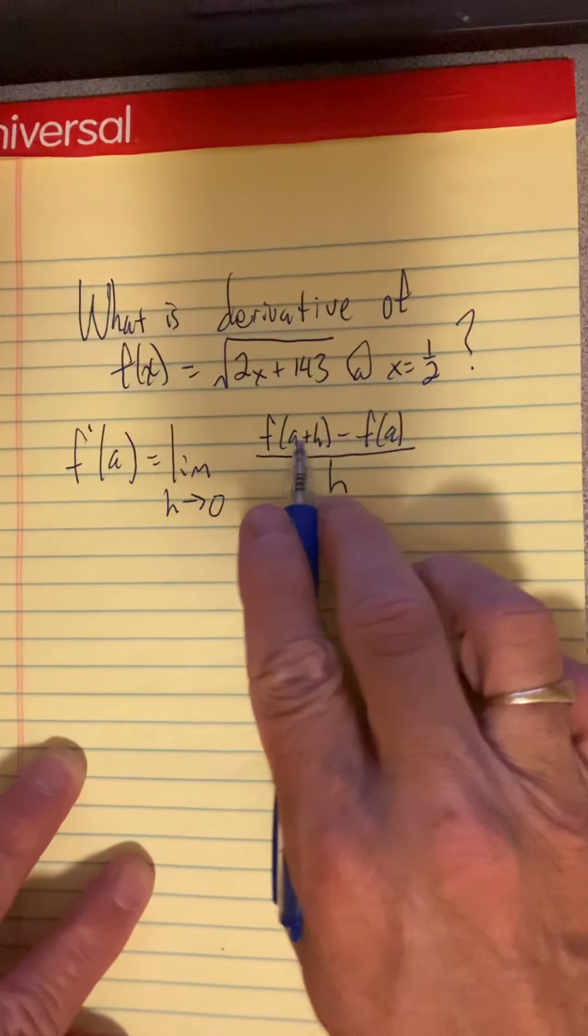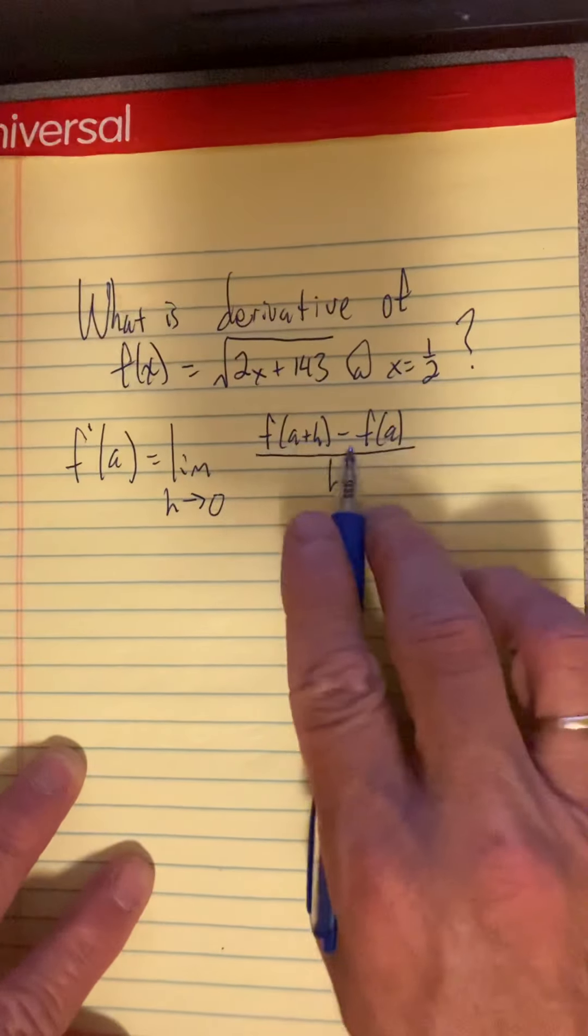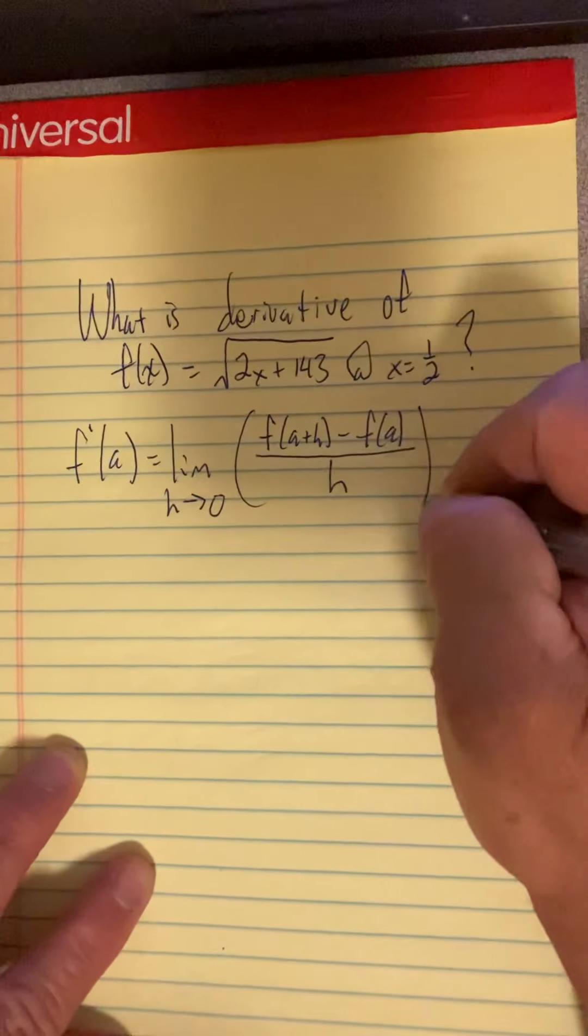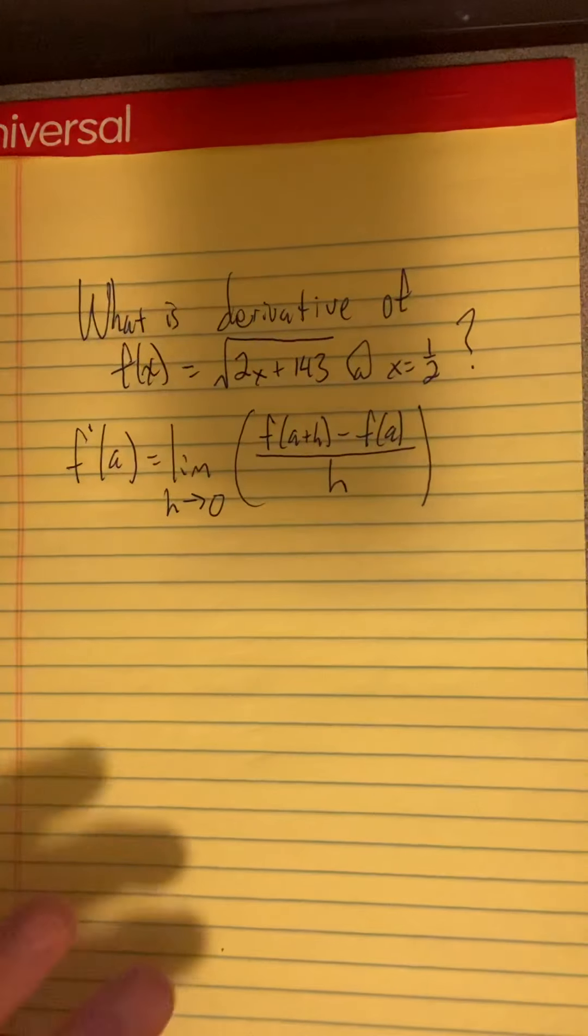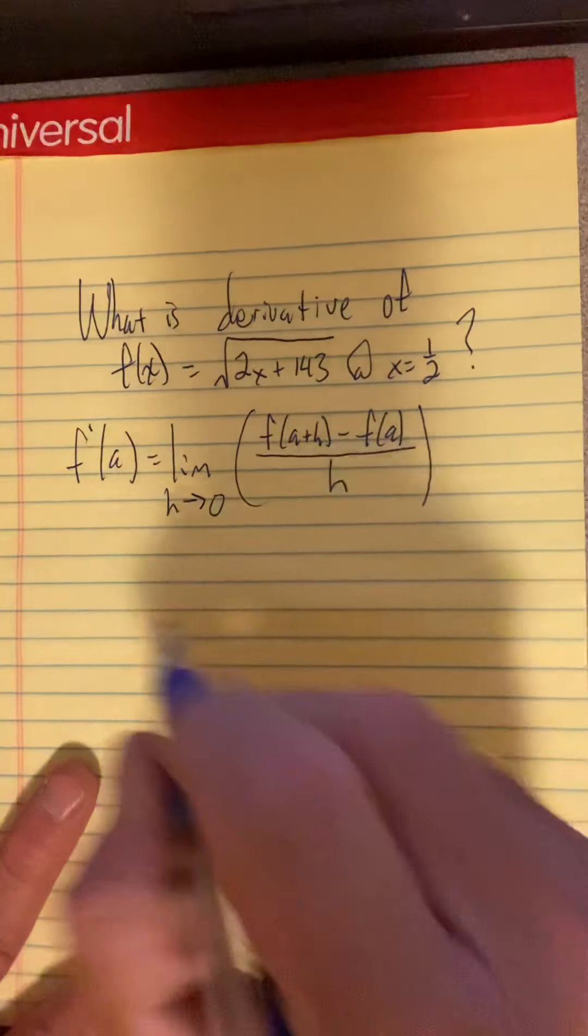So this is the y value at the second point, y value at the first, and you subtract. So there's the definition of the derivative. And what we're going to do is just plug in, only our a is a half.